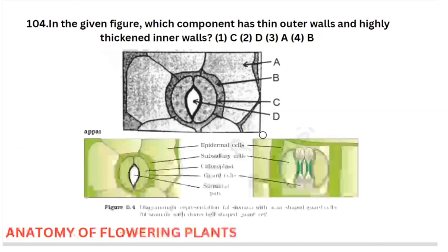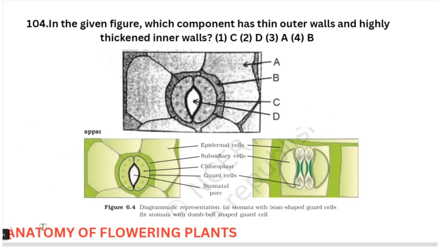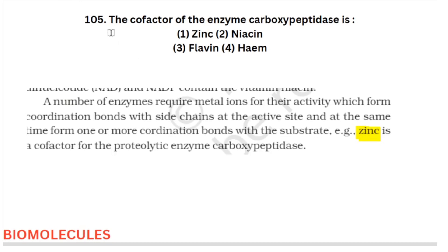The next figure — which everyone might have seen — is coming from your anatomy of flowering plants. The question is: which component has thin outer walls and highly thickened inner walls? If you see the diagram, it is directly from your NCERT, and the definitions are also given in the anatomy of flowering plants chapter. This question is taken from those lines.